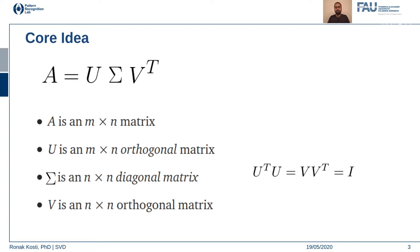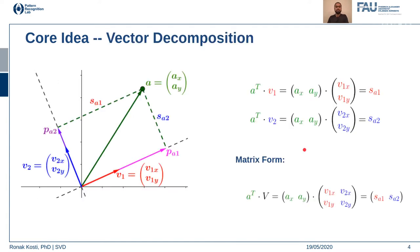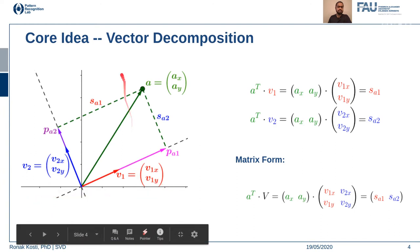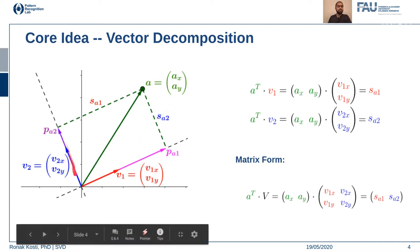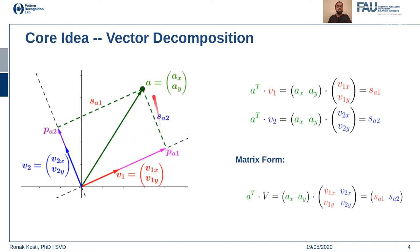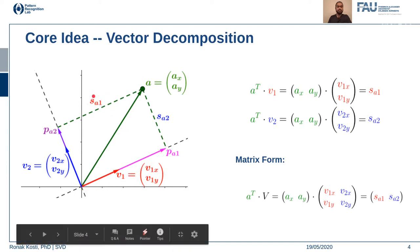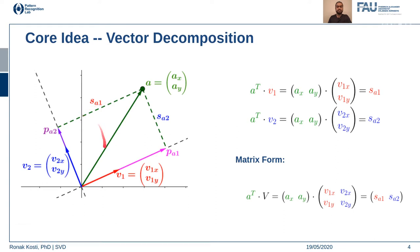So let's jump into the basics. First, we want to look at vector decomposition. Let's say you have a point A in a vector space, with axes x and y. Any point A can be represented by its x and y components. Let's say V1 and V2 are two different orthogonal directions. We want to decompose vector A into these directions. When we project this point along these directions, the component of A in the direction of V1 is s_a1 — that's the length or strength of vector A along direction V1.